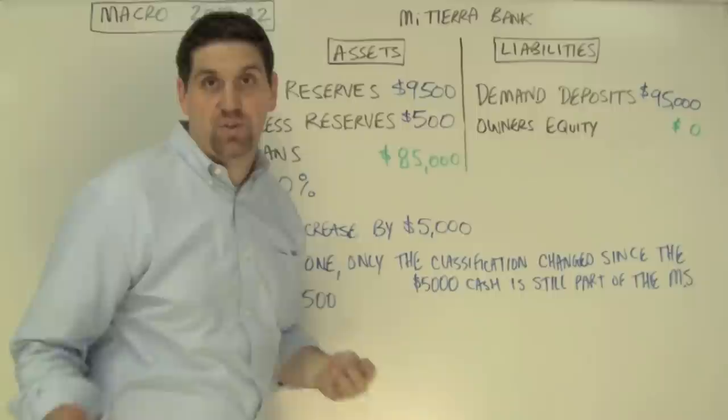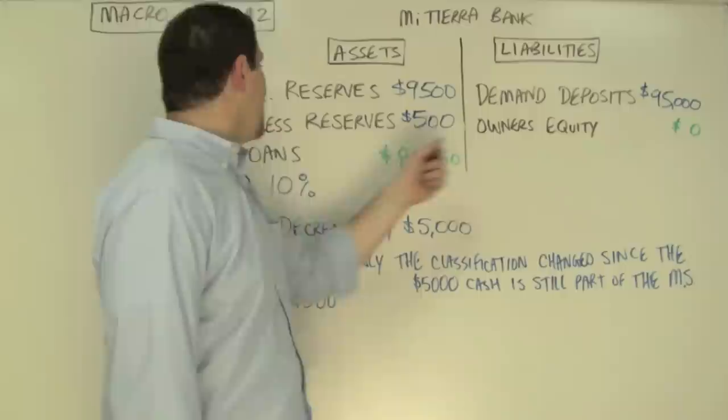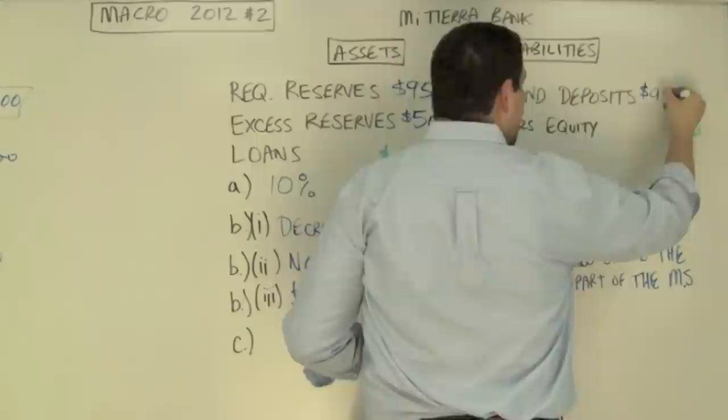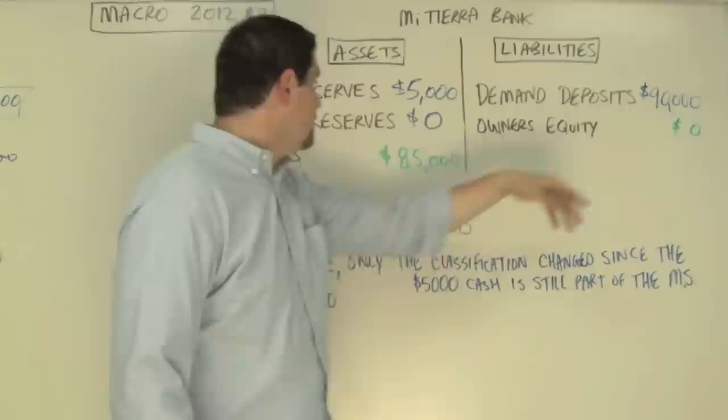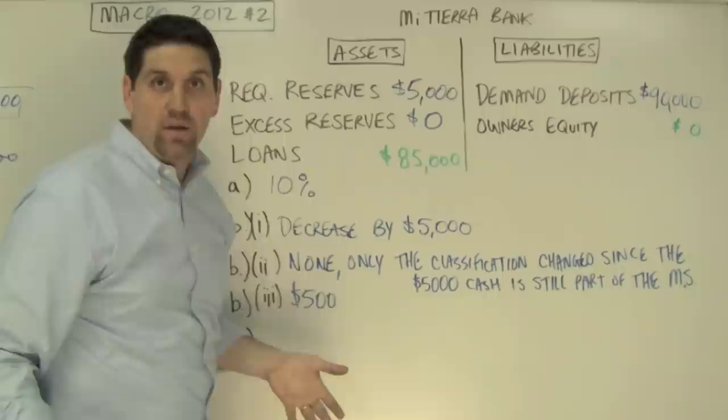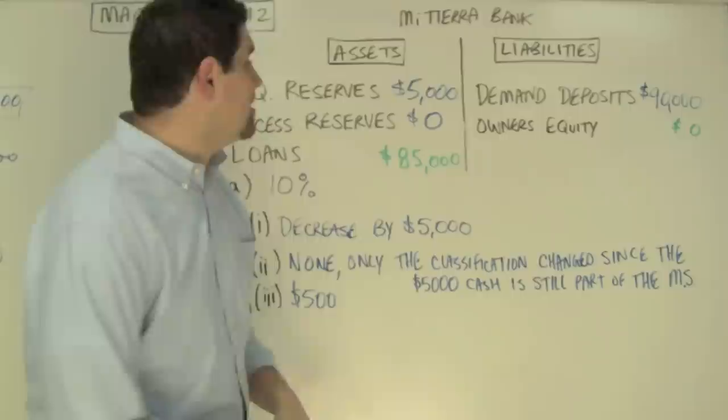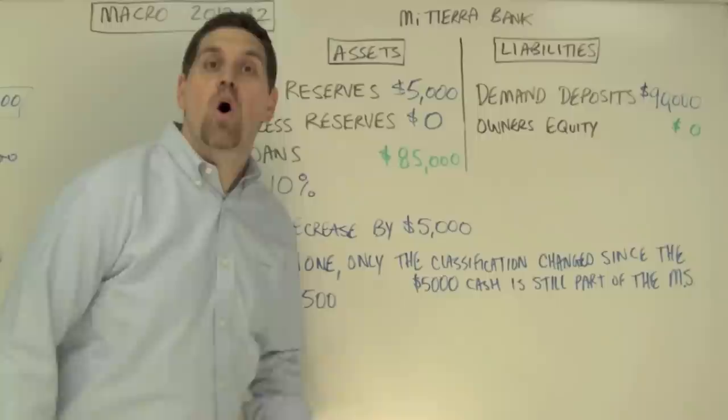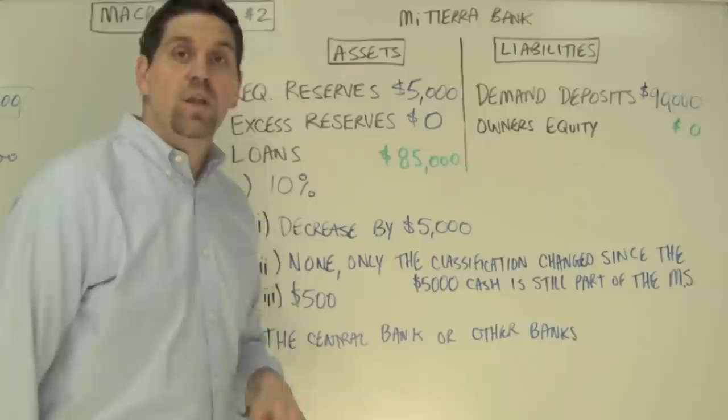Part C says another customer comes to the bank and wants to withdraw more money than the bank has in excess reserves — for example, another $5,000. Now the bank has $90,000 of demand deposits, $85,000 of loans, no excess reserves, and a required reserve of only $5,000. But the bank needs 10% of required reserves, so they're not meeting the reserve requirement. Commercial banks can go to two separate places to cover this: they can go to the central bank, or they can go to other commercial banks.